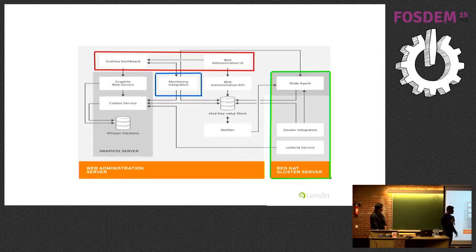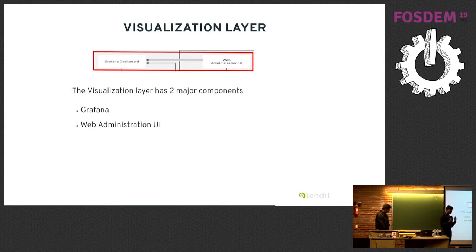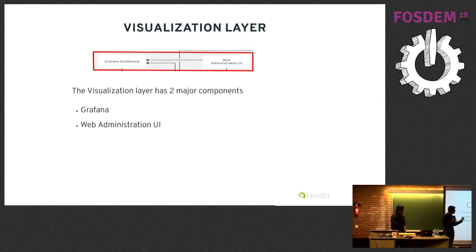Now we will discuss the last layer: the visualization layer. This contains two major parts for visualizing metrics and topology. One is the web administration UI, or Tendril UI, which displays the cluster topology in a user-understandable way. Using it, a user can drill down and easily identify the volumes in a cluster and the nodes participating in a cluster. The second is the Grafana dashboard. We use Grafana for monitoring — it fetches monitoring metrics from Graphite and displays those monitoring details using graphs and panels.